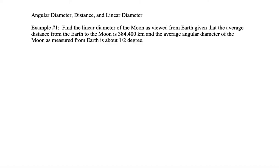We want to find the linear diameter of the Moon as viewed from Earth given that the average distance from the Earth to the Moon is 384,400 kilometers and the average angular diameter of the Moon as measured from Earth is about half a degree.